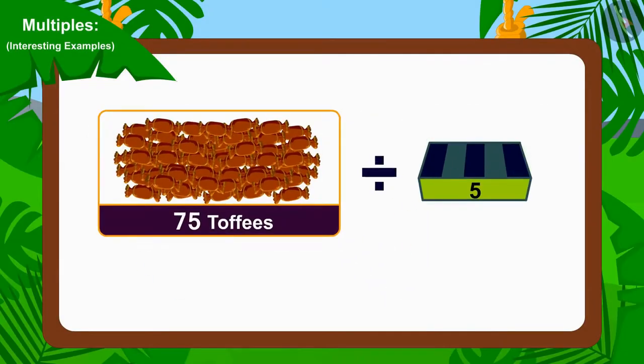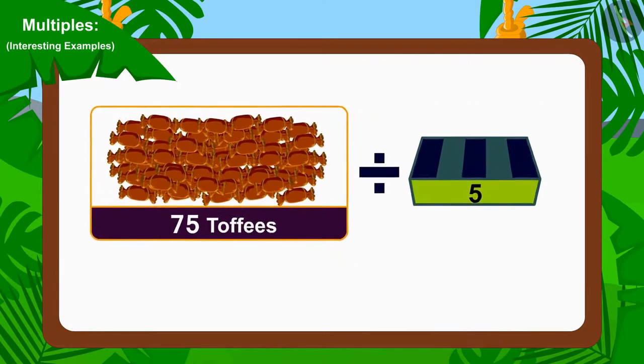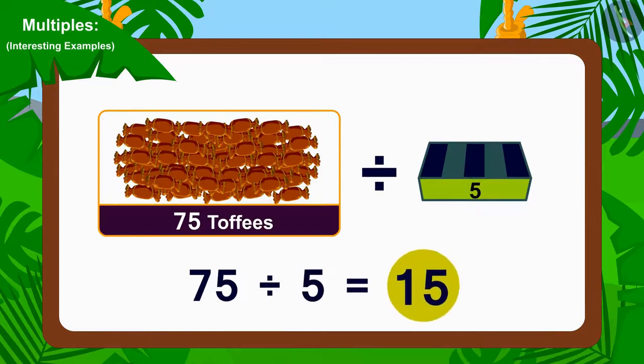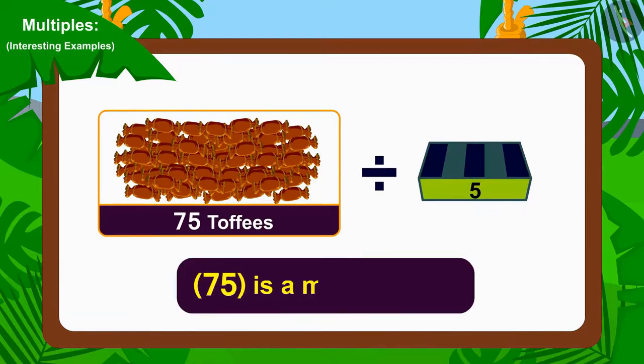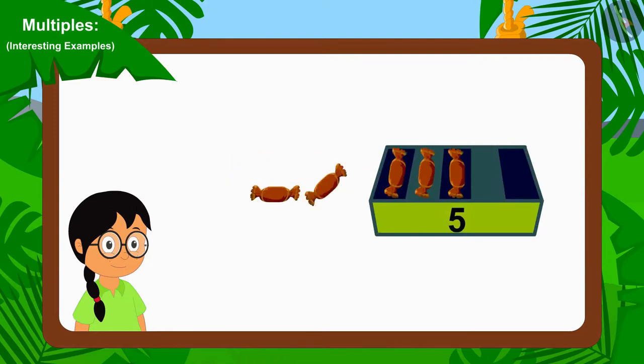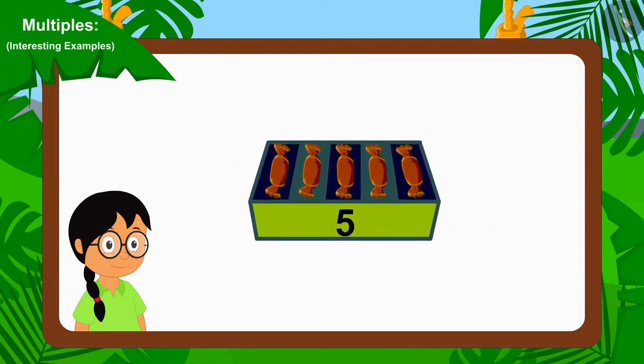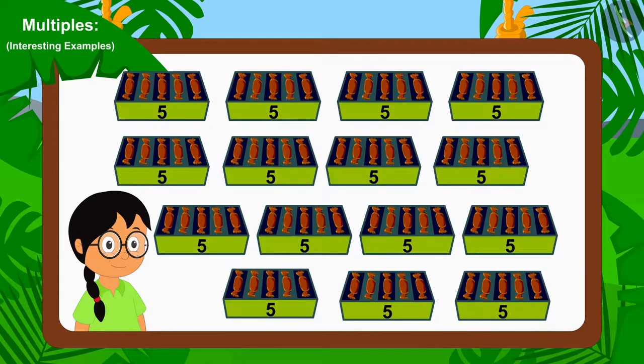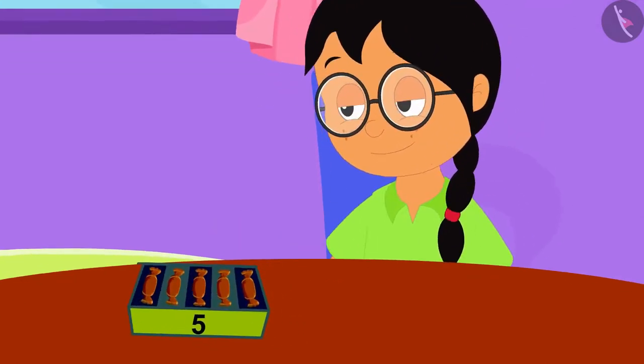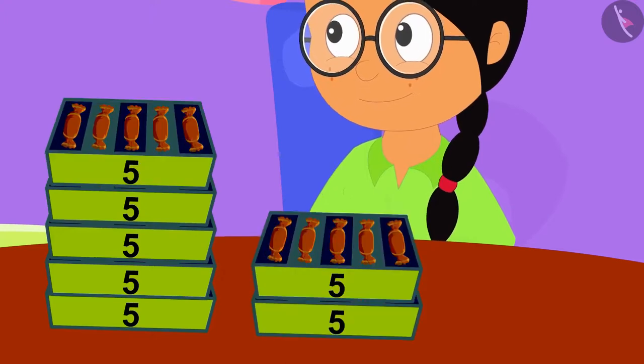Children, you have found the answer absolutely correctly. We can divide 75 by 5. In other words, 75 is a multiple of 5. Therefore, by forming a group of 5 toffees, Meenu can divide these toffees equally among her friends. With the help of your answer, Meenu made 15 groups of chocolate toffees and filled 15 boxes.